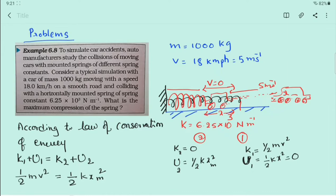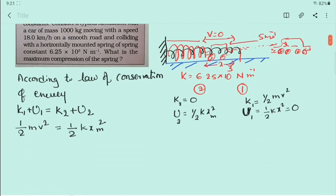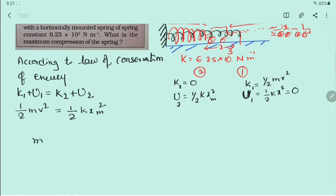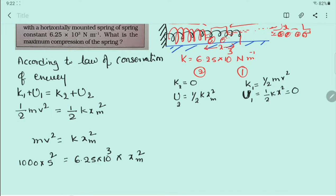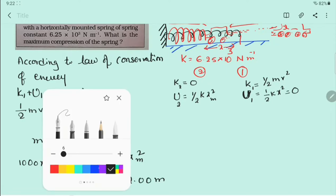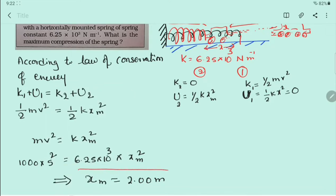Now, what is the maximum compression? How to calculate? The ½ gets cancelled on both sides, giving mv² = kx²_m. Substituting all values: k = 6.25 × 10³, mass = 1000 kg, velocity = 5 m/s, so v² = 25. After all calculation, you will get x_m equal to approximately 2 meters. This is a simple solution using the law of conservation of energy, where kinetic energy is converted into potential energy.